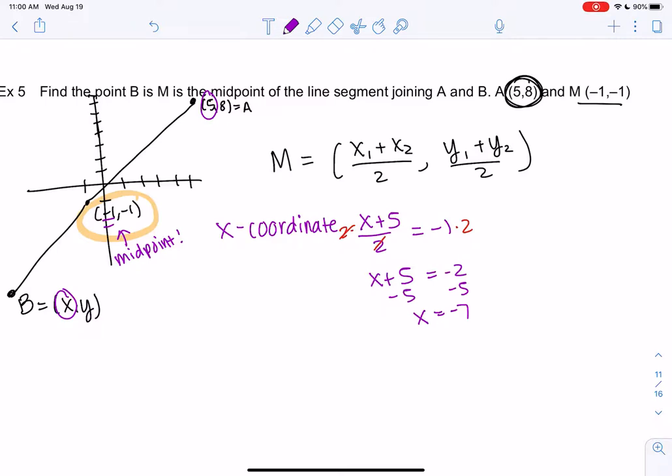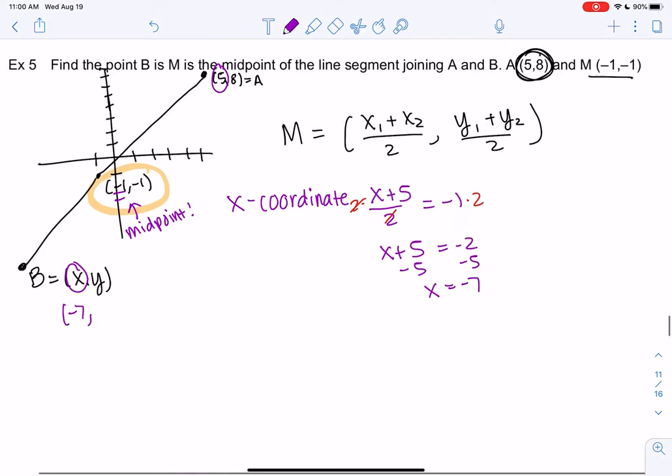All right, so this isn't the midpoint. This is part of the other point. So negative 7. Seems to make kind of sense with my image, with my graph.